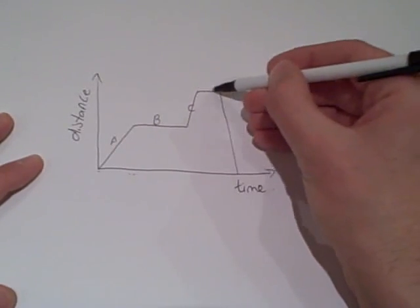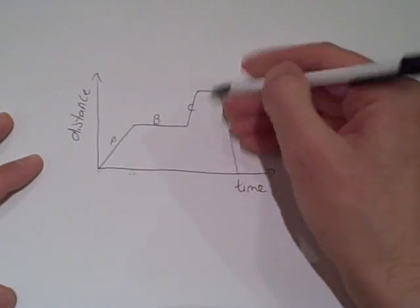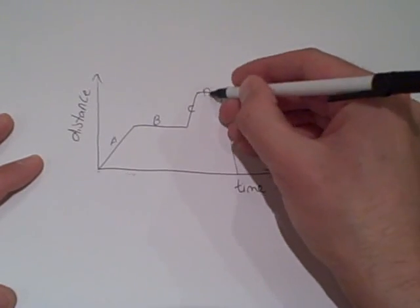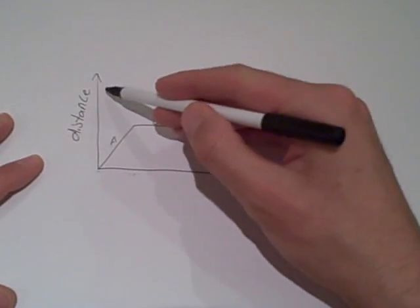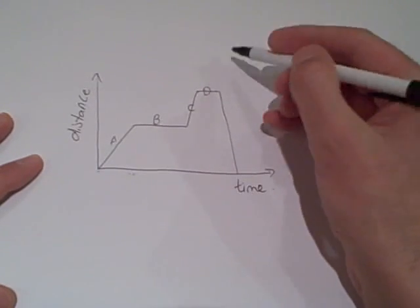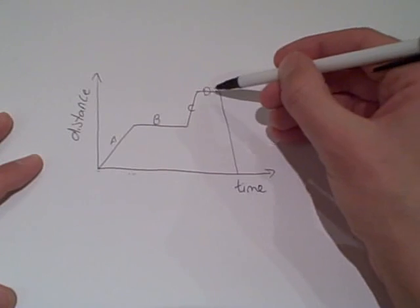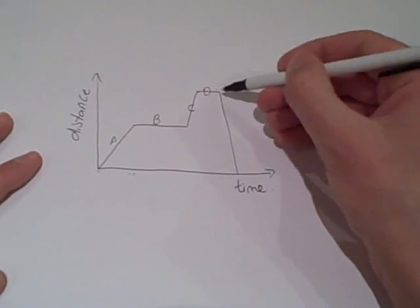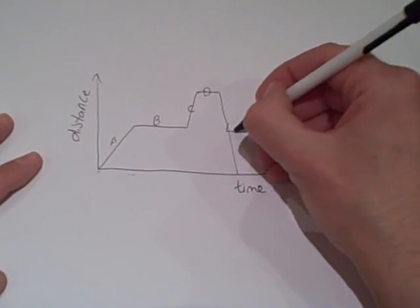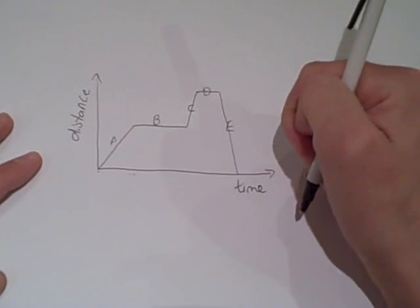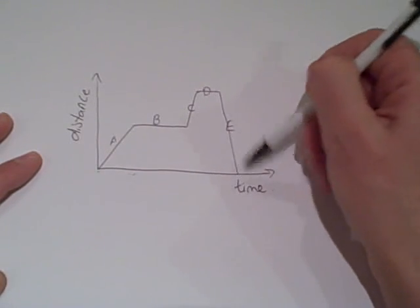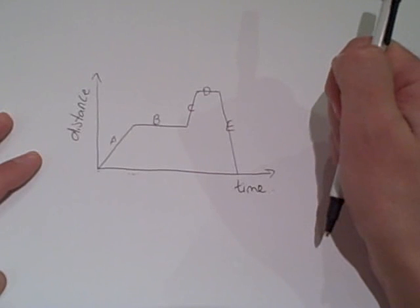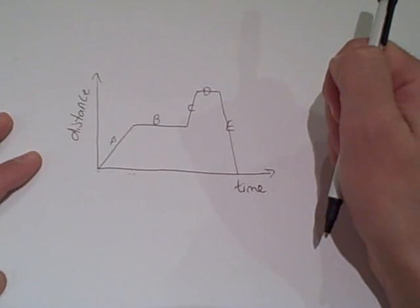In section D, as time increases, the distance stays the same, telling us it is stationary again. And in section E, as time passes, the distance decreases, which tells us that it's going back in the other direction.